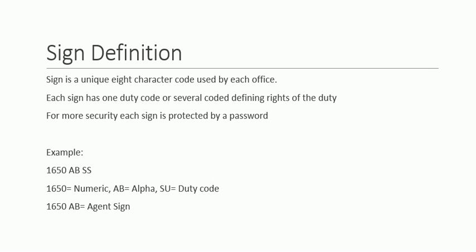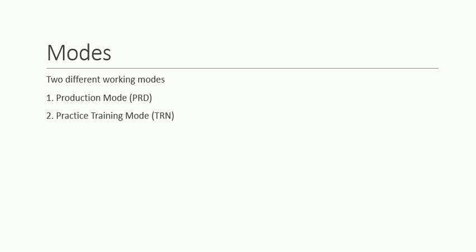The Amadeus system provides two different modes: production mode and practice training mode. Production mode is to make real bookings for passengers. The practice training mode is used for practice reservations which are not saved and are automatically deleted every Sunday, so it is only valid for one week. You should learn using the practice training mode first, then move into the production mode.